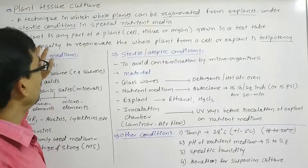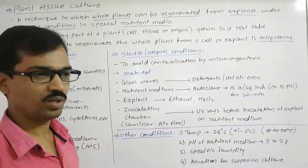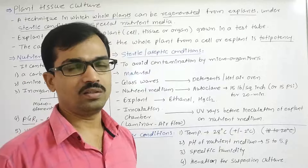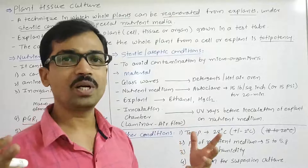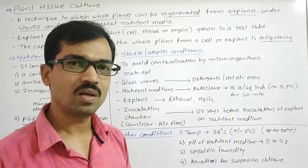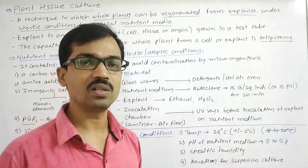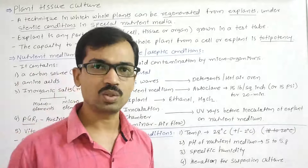The capacity of plants to get regenerated into whole plants from explants is called totipotency — the ability of a cell to divide, redivide, differentiate, and form a complete organism. Totipotency is present in all plant cells at any stage. In animals, however, only early embryonic cells can show totipotency and give rise to a complete organism.